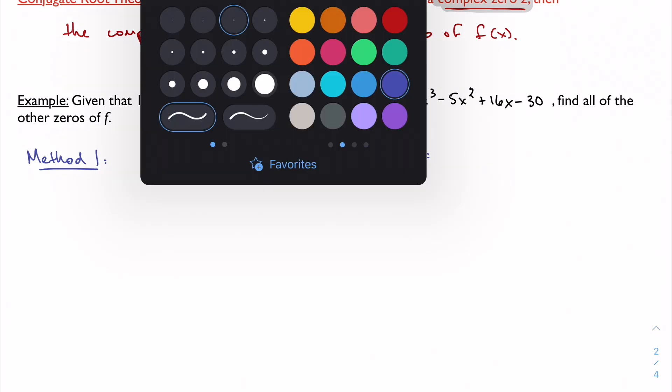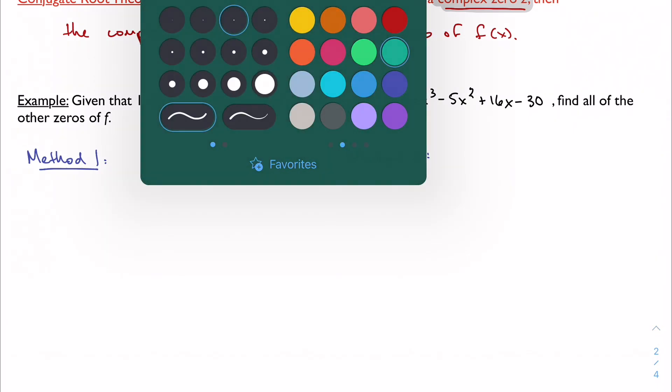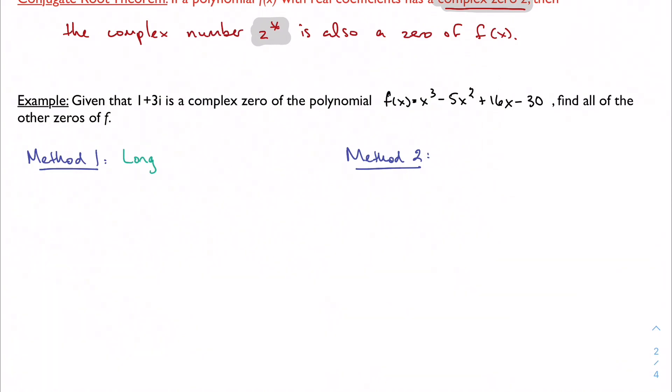Method 1 is to use long division, because we know that 1 plus 3i is a complex zero, which means I know that x minus (1+3i) is a factor.